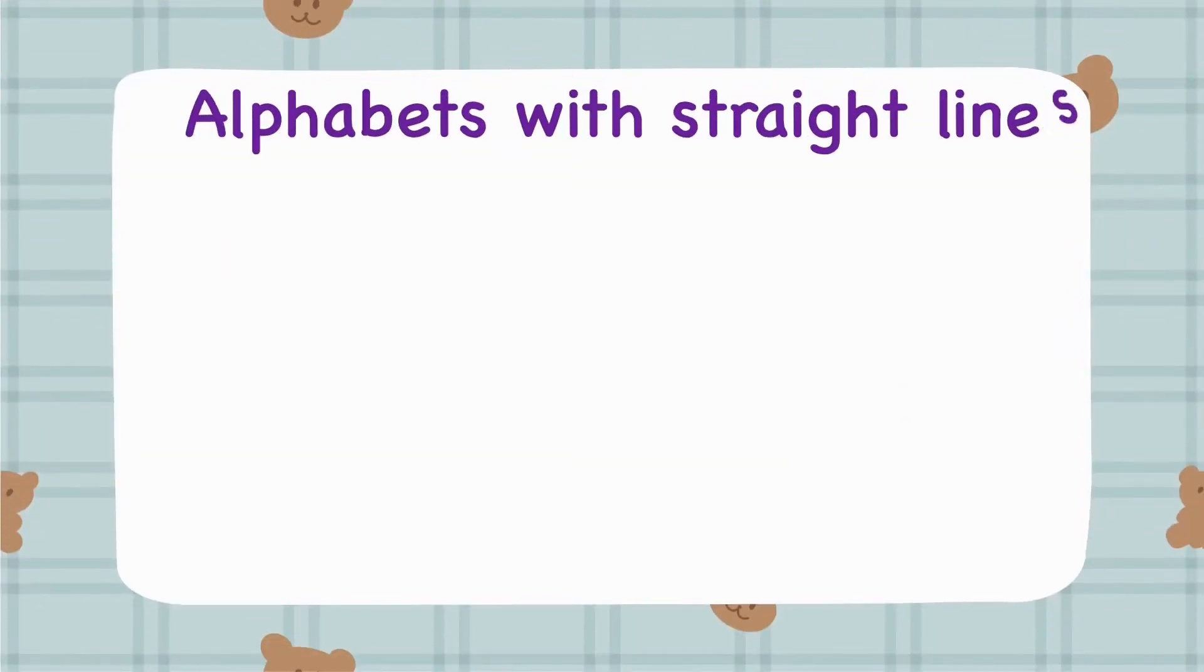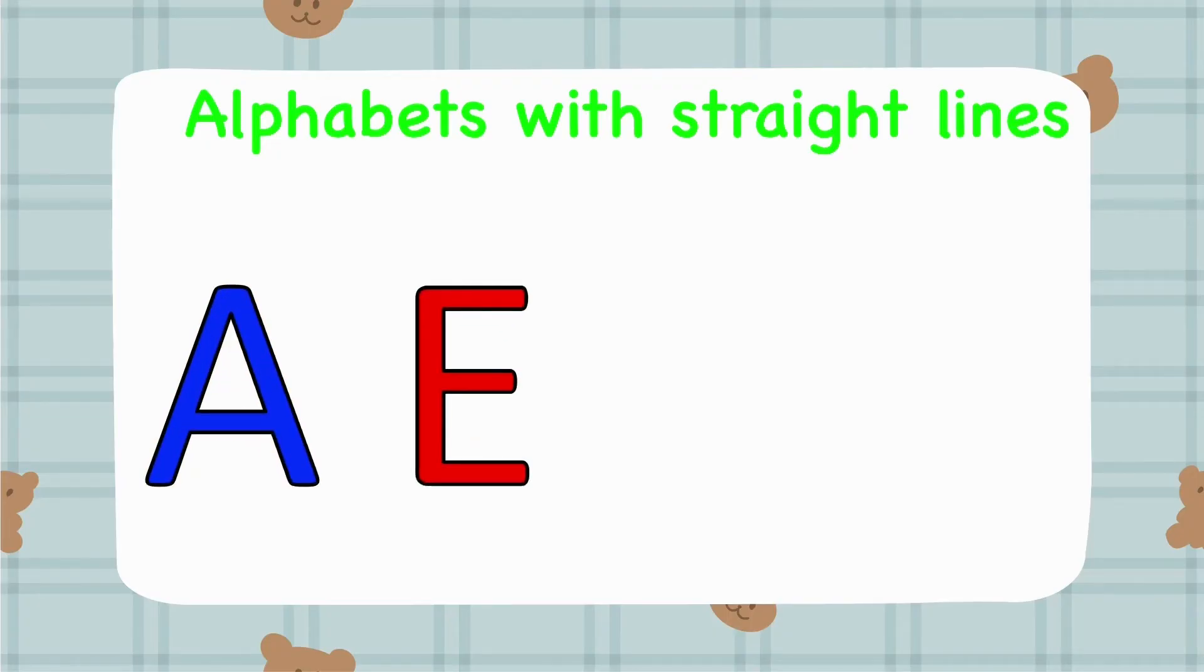Now, let's look at some alphabets with straight lines, like A, E, Y, Z, and many more.